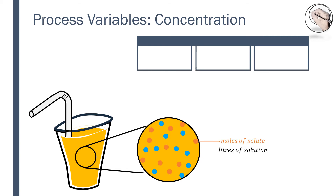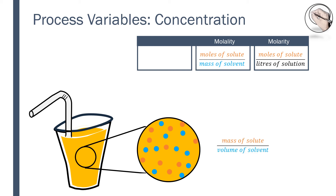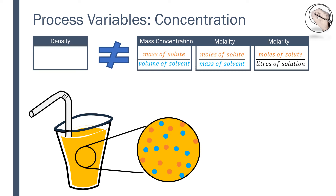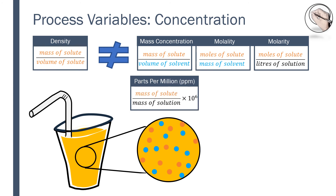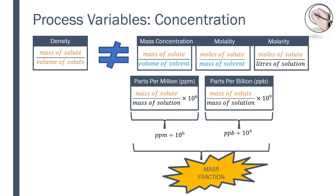The concentration of the solute or the juice concentrate molecules can be measured in various ways. We can either calculate the number of moles of solute and divide by the liters of solution — this is called molarity — or we can calculate the number of moles of solute and divide by the mass of solvent, where solvent is water in this case, to find molality. Please do not confuse mass concentration with density. They have the same units, but density has volume of solute in the denominator. If the number of molecules is too small, we can report concentration in parts per million or parts per billion. If we were to remove the million and billion, this gives us a mass fraction.